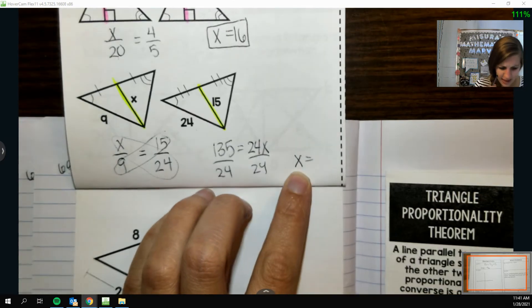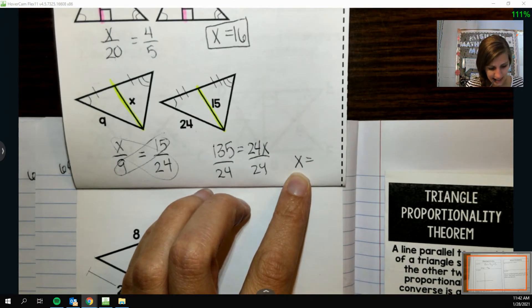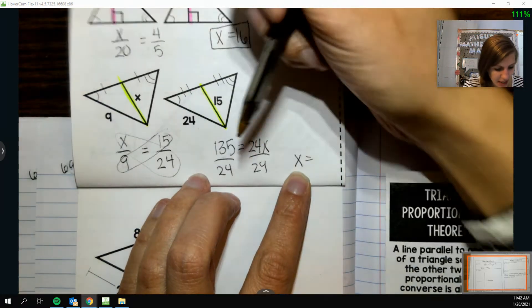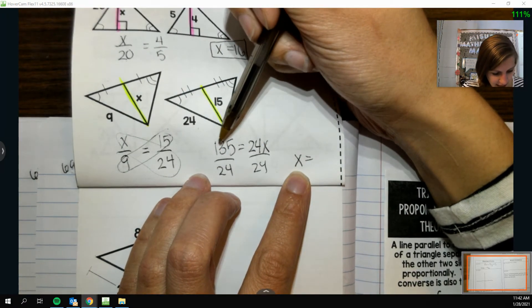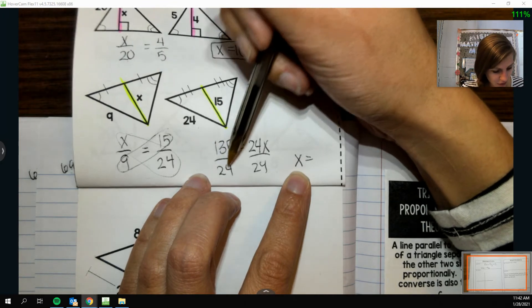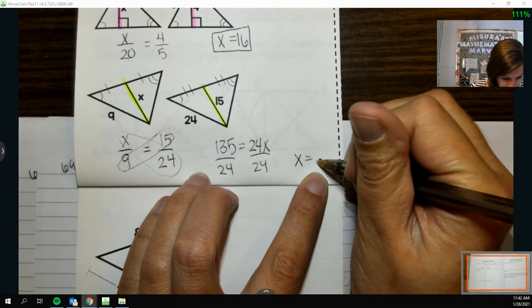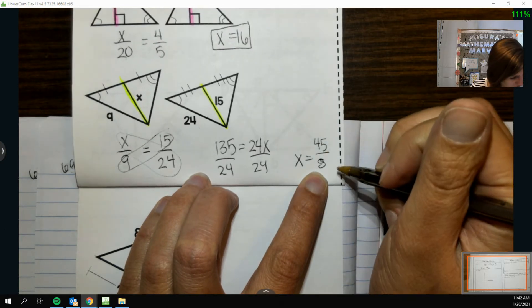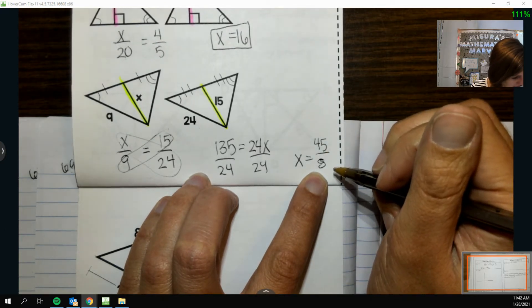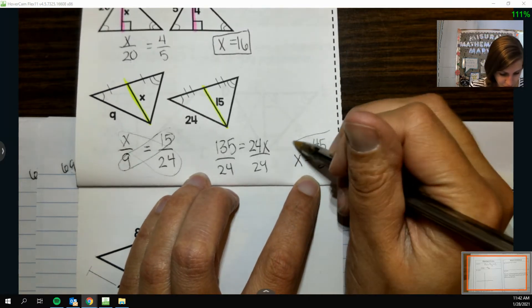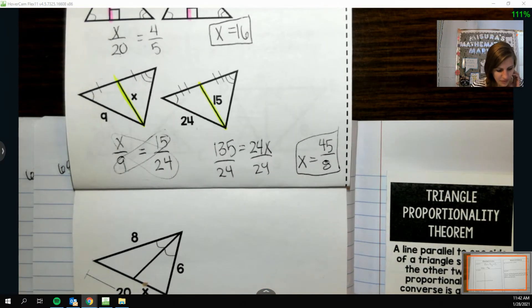135 equals 24 times x. And then divide both sides by 24. And I think, yeah, 3 will go into both. If I add up the digits, 5, 6, 7, 8, 9, 3 goes into 9. So 3 will go into that. And 3 will go into 24 eight times. So 45 over 8. Can I reduce more than that? I don't think so. So there you go.